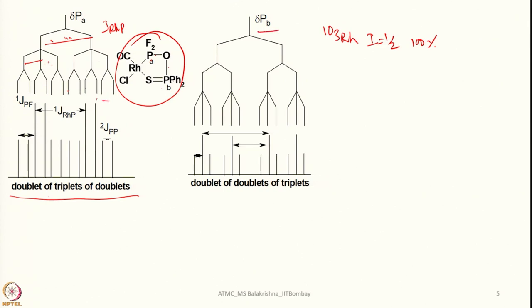In the same way, for phosphorus B, first there will be 2J(P-P) coupling, which is larger here, giving a doublet. Then 2J(Rh-P) coupling will split it further, and finally each line will be split by fluorine. So this one is a doublet of doublet of triplets. For phosphorus A, the coupling with rhodium is larger — about 250 Hz — followed by triplet splitting from P-F coupling, then smaller P-P coupling. The overall pattern is a doublet of triplets of doublets.